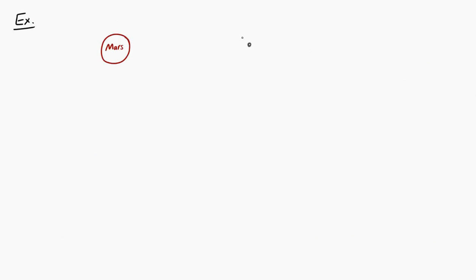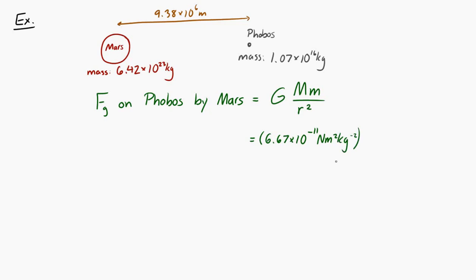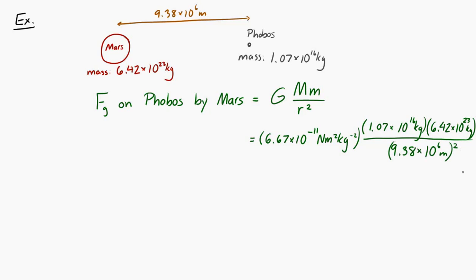Let's do a quick example with Mars and Phobos, a moon of Mars. To find the gravitational force on Phobos by Mars, we use F = GMm / r²: that's 6.67 × 10⁻¹¹ × 1.07 × 10¹⁶ kg × 6.42 × 10²³ kg, divided by (9.38 × 10⁶ m)². When you put that in your calculator, the gravitational force on Phobos by Mars is 5.21 × 10¹⁵ Newtons, and that force is attractive — so the force on Phobos is toward Mars.